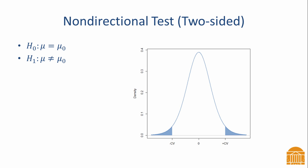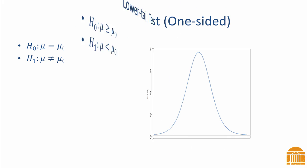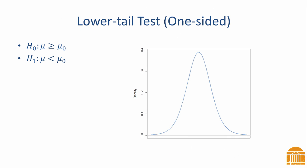The one sample t-test also allows for one-sided hypothesis tests. The alternative hypothesis for a lower tail test states that the mean is less than some value. The rejection region is in the lower tail of the distribution. You can see it here, shaded in blue.